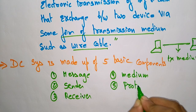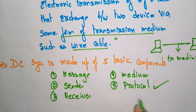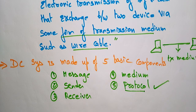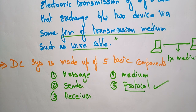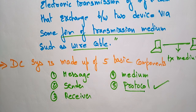And the final component is protocol. A protocol is nothing but a set of rules. If you want to perform data communication between devices, you need some set of rules — without rules, you can't send the data correctly. For example, if you are going on the road in traffic and you follow the protocols, you can reach your destination safely. In the same way, whatever work you want to do, you need to follow some set of protocols to achieve your goal.